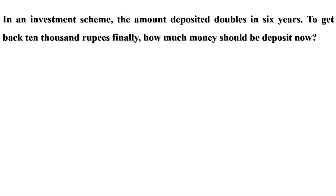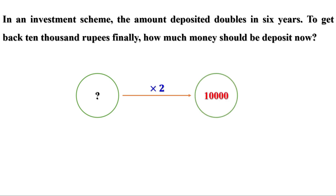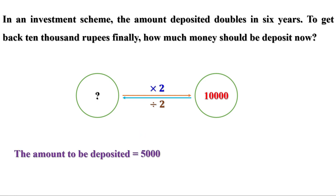Now let us discuss the next section: multiplication and division. In an investment scheme, the amount deposited doubles in six years. To get back 10,000 rupees finally, how much money should be deposited now? We don't know the amount. When it is multiplied by 2, it should be 10,000. We need the amount before multiplication, so do the reverse: divide 10,000 by 2. We get 5,000. The amount to be deposited is 5,000, and after six years it doubles to become 10,000.